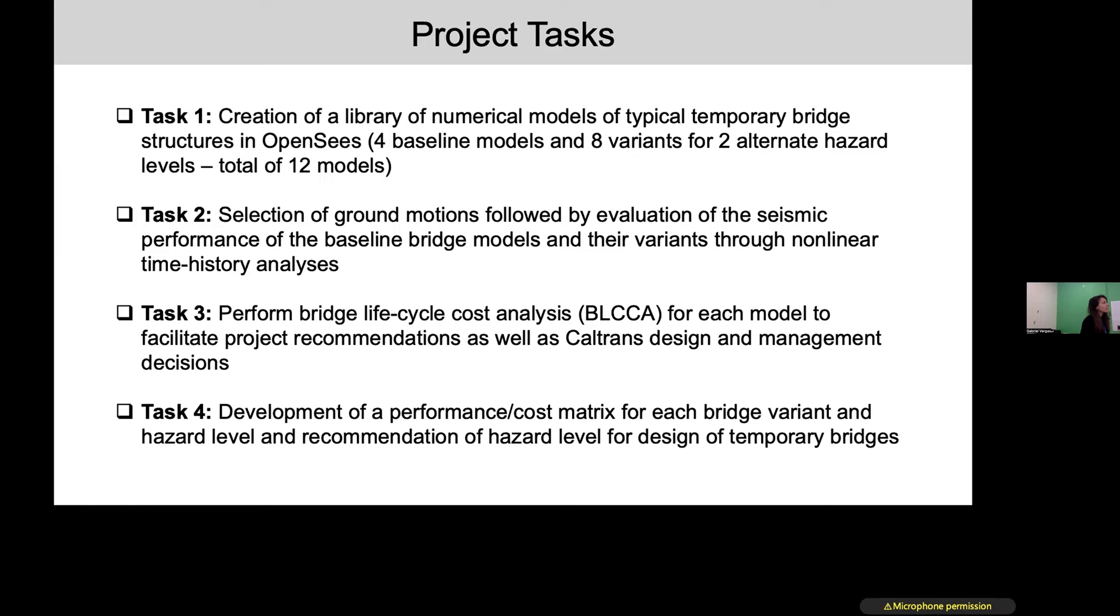In Task number one, we are going to create a library of numerical models of typical temporary bridges in California in four separate locations. This will be all done in OpenSees. We have four locations, four baseline reference bridges which reflect the current design approach, and then we will have for each of them two alternate models, for a total of 12 bridges.